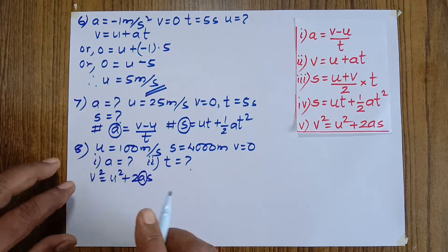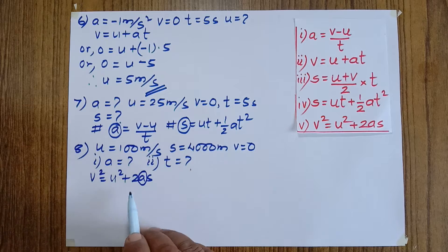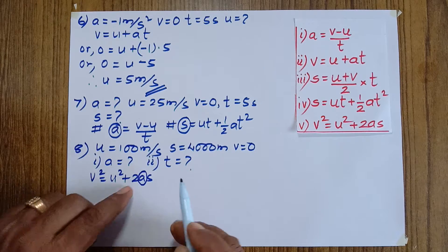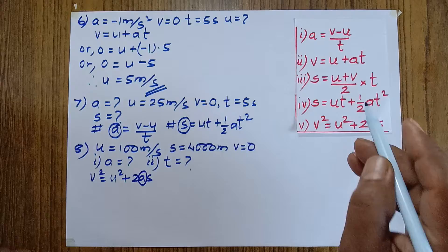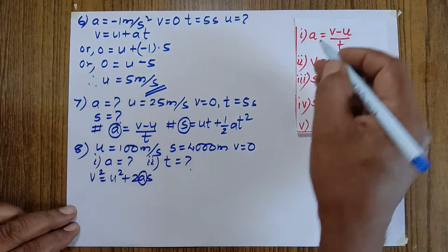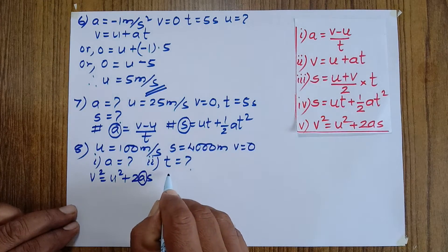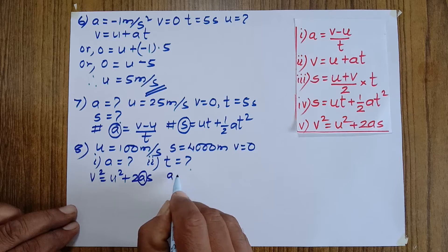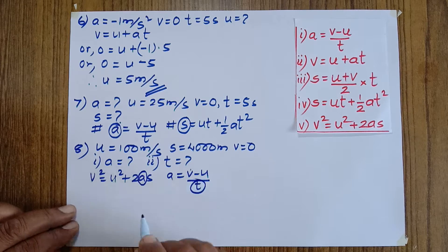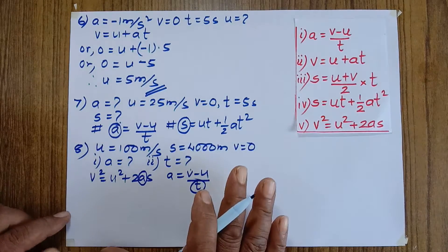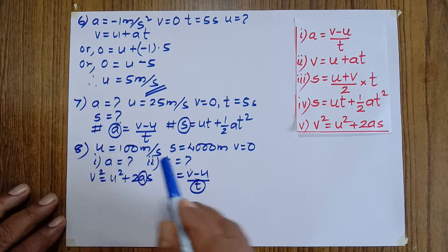After calculating a using v² = u² + 2as, we now have u, s, v, and a — four quantities. The fifth unknown, t, can be found using the first equation: a = (v − u) / t, rearranging to solve for t.